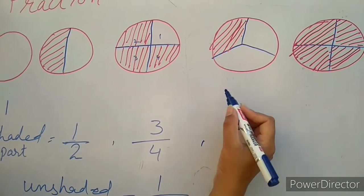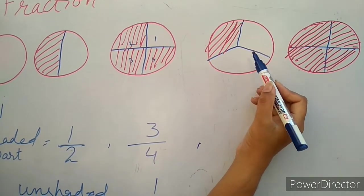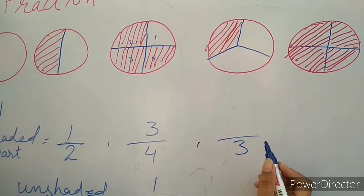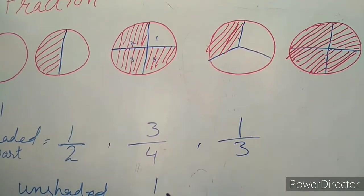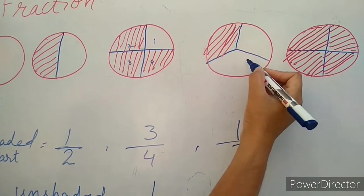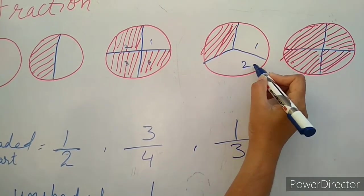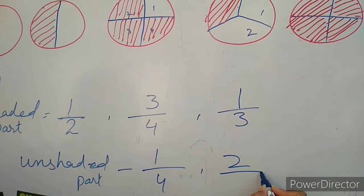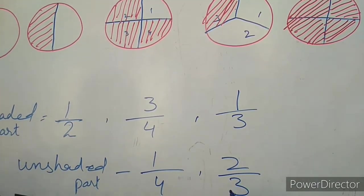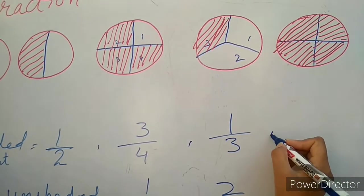In this circle, the circle is divided into three parts. One part is shaded, so we write one over three as a fraction. Two parts are plain out of a total of three parts, so we write two over three — two over three is a fraction.